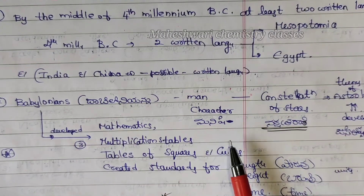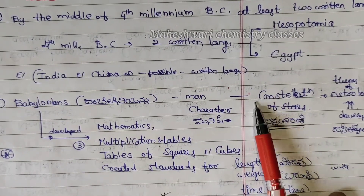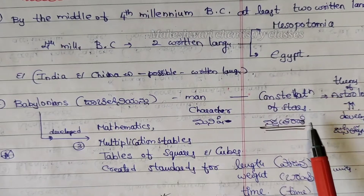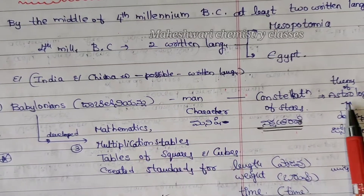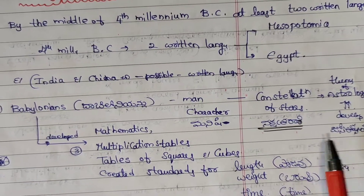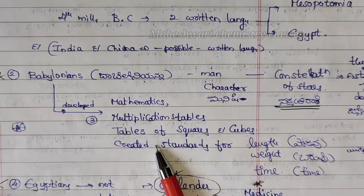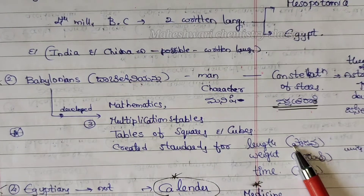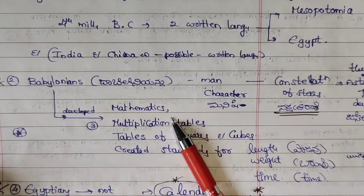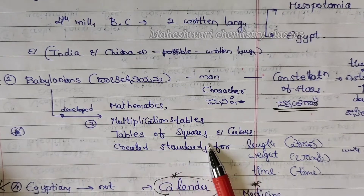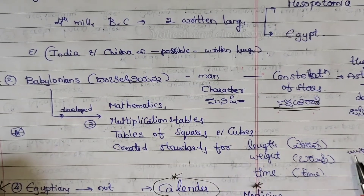Babylonians developed the study of the moon, that is Jyotisha and Shashram. Babylonians also developed mathematics — multiplication tables, tables of squares and cubes. These are the ones who created standards for length, weight, and time.